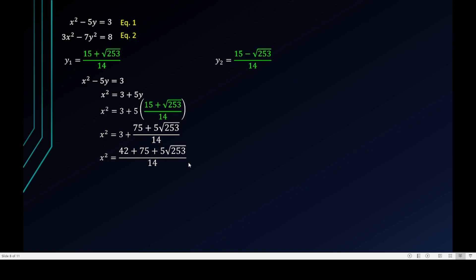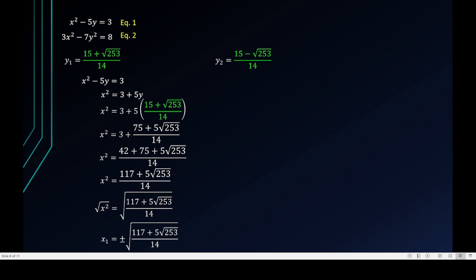Getting the LCD, I combine to get (42 + 75 + 5√253) / 14, which simplifies to (117 + 5√253) / 14. Since we have x squared, I take the square root of both sides. The result is labeled x₁ — I'm pairing it with y₁, so x₁ equals plus or minus the square root of (117 + 5√253) / 14.